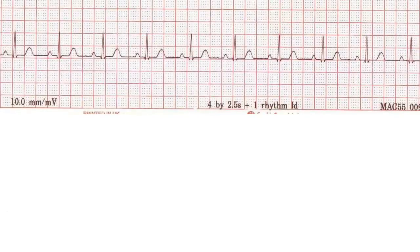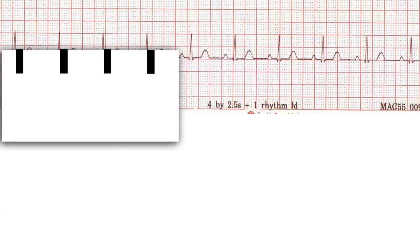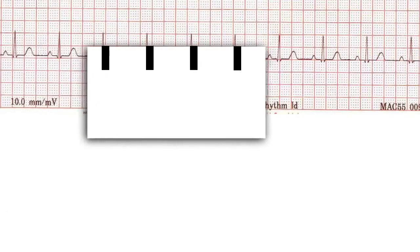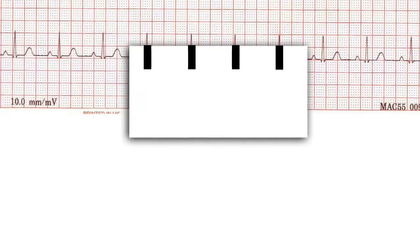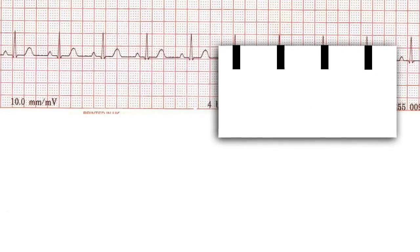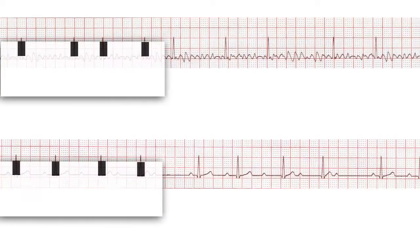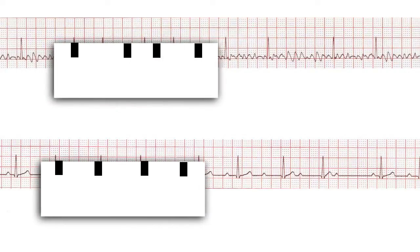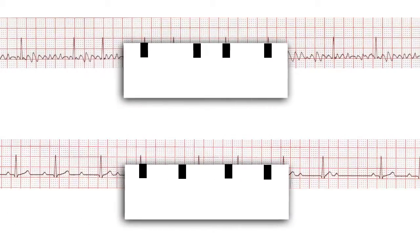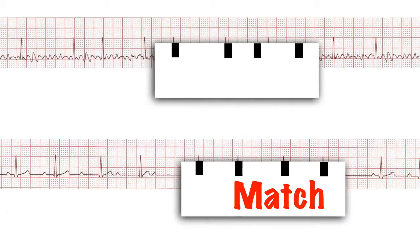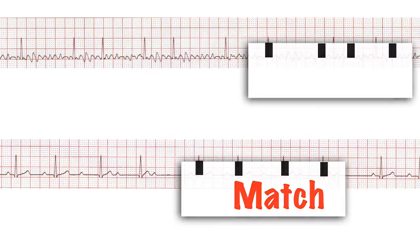Sometimes it's obvious just by eyeballing the rhythm strip, but one of the quickest ways to see more accurately is to take a piece of paper and mark the peak of several consecutive R waves on it. Then move the paper along a few R waves and see if they still line up. If they do, the rhythm is regular. If they don't, the rhythm is irregular, and you need to see if there is a pattern to this irregularity or whether it's truly irregular.